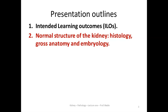The second outline of this presentation is that I am going to talk a little about the normal structure of the kidney. This includes the normal histology, the gross anatomy, and the embryology. Without understanding these structures, you may not understand the pathology, because pathology is deviation from normal in structure and function. If you do not know what is normal — the normal anatomy, the normal histology — you are not going to be able to determine diseases.